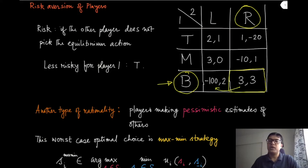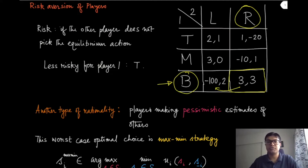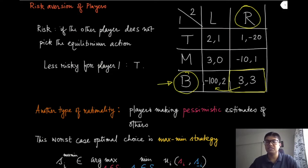How can we handle that? How can an agent who is unsure about the intelligence of the other player still play a strategy and not be super worse off? That is exactly what we are going to discuss in this module. It is called the maximin strategy — something like a worst-case optimal choice.